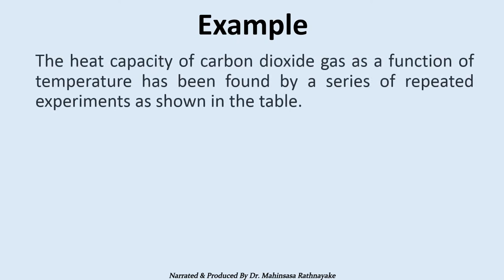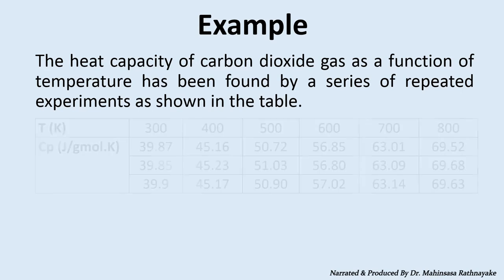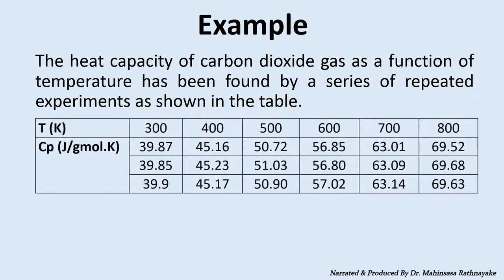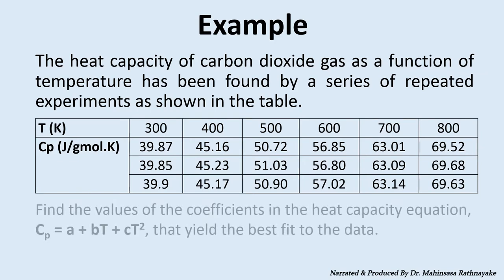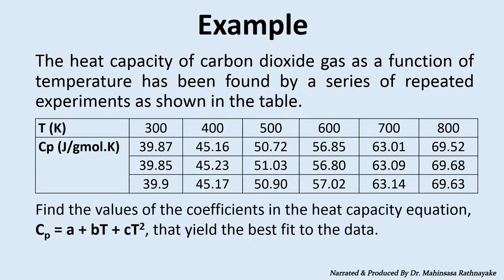Let's discuss an example so that it will be clear why we should use Microsoft Excel in enthalpy calculations. The heat capacity of carbon dioxide gas as a function of temperature has been found by a series of repeated experiments as shown in the table. Find the values of the coefficients in the heat capacity equation Cp = A + B·T + C·T² that yields the best fit to the data.